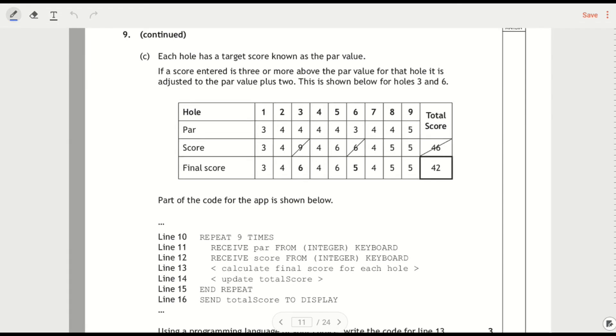Each hole has a target score known as a par value. If the score entered is three or more above the par value—that's par plus three—so if it's greater than or equal to par plus three, it's adjusted to the par value plus two. This is shown below for holes three and six. For hole three, they took nine shots to get it. The par was four, so therefore it becomes four plus two.